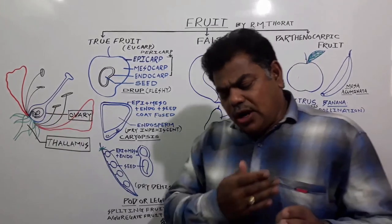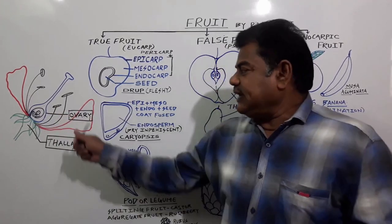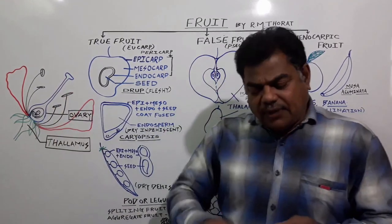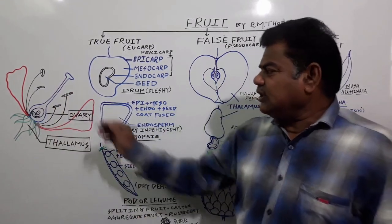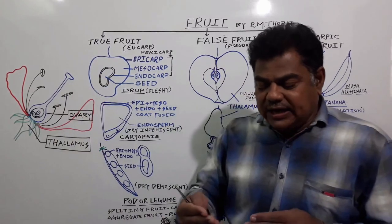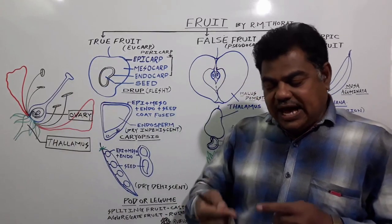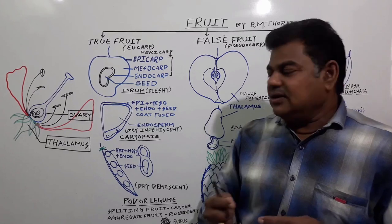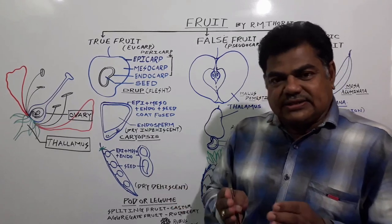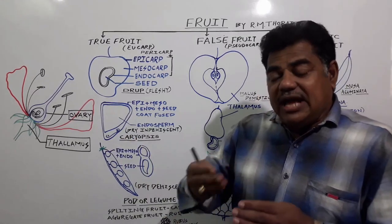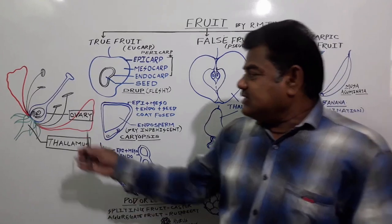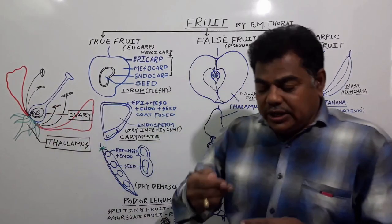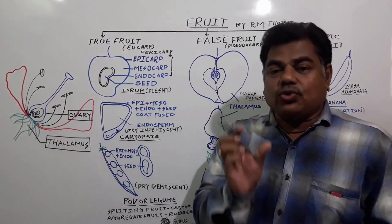All these events which take place after pollination and after fertilization are interconnected and interdependent with each other. These events ultimately transform the ovary, along with the ovule, into a complete fruit after fertilization.